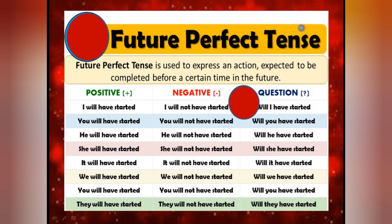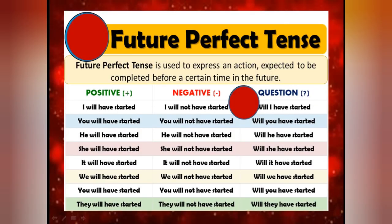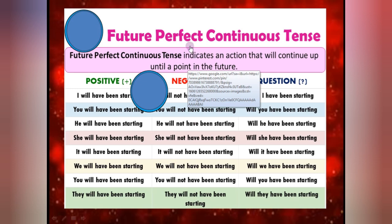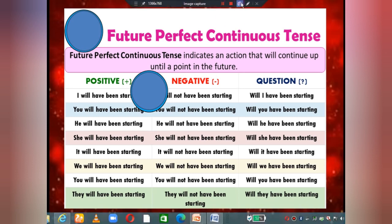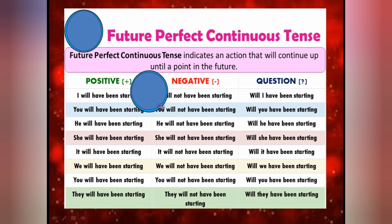Now the next one — the last tense of the future tense — that is future perfect continuous tense. Future perfect continuous tense indicates an action that will continue up until a point in the future, meaning it is going to be continuously ongoing. Like 'I will have been starting.' Until a point in the future — a point you don't even know. 'You will have been starting. He will have been starting.' It means from the past your work is going, your work has started, and it will not be ending in the future also. So when the action continues up until an unspecified point in the future, we use future perfect continuous tense.